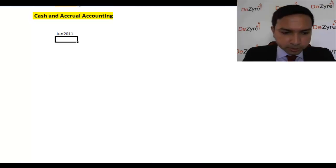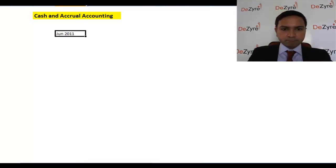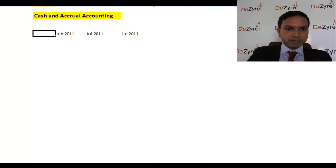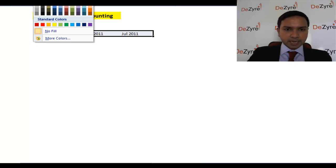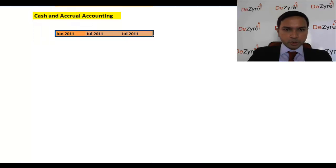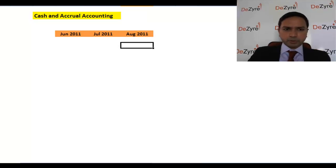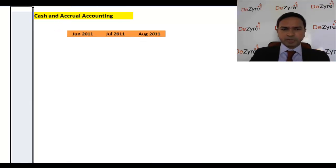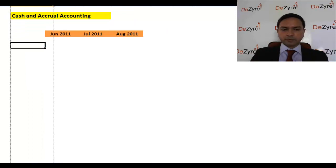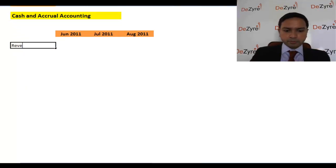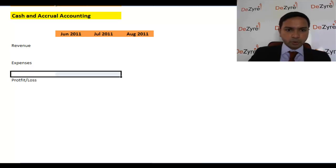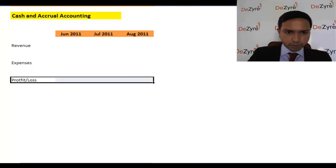We'll use June, July, and August 2011. There's a reason I'm building this out in front of you rather than showing something already built — so you'll know how to build these things in Excel, which is very important. We're going to make this as simple as possible: a very mini income statement covering basic revenue, expenses, and profit or loss.